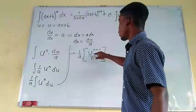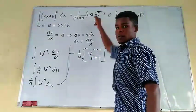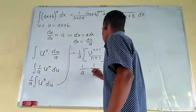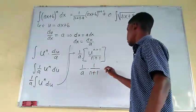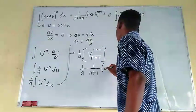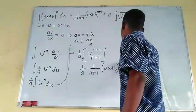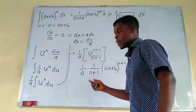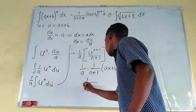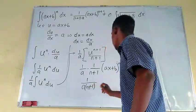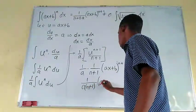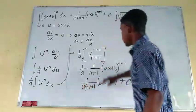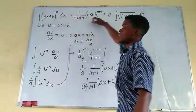U raised to the power of N plus 1, divided by N plus 1, and what was our U? Well, our U was equal to AX plus B. So we just need to have 1 divided by A times 1 divided by N plus 1. And this is U, where U is AX plus B, we just have AX plus B raised to the power of N plus 1. We just multiply the two terms. We have 1 over A times N plus 1, then this is just AX plus B, and it's raised to the power of N plus 1. Yes!